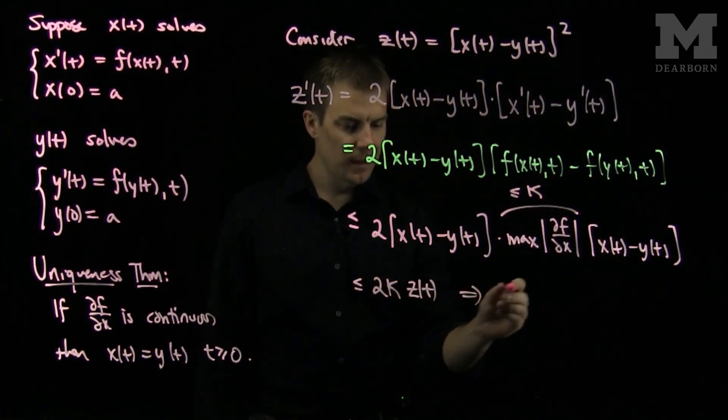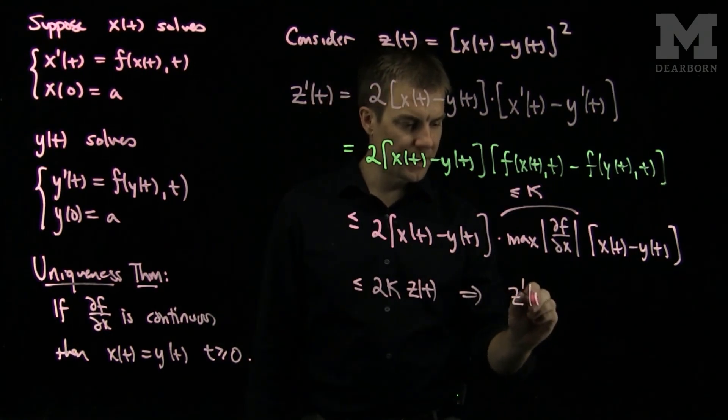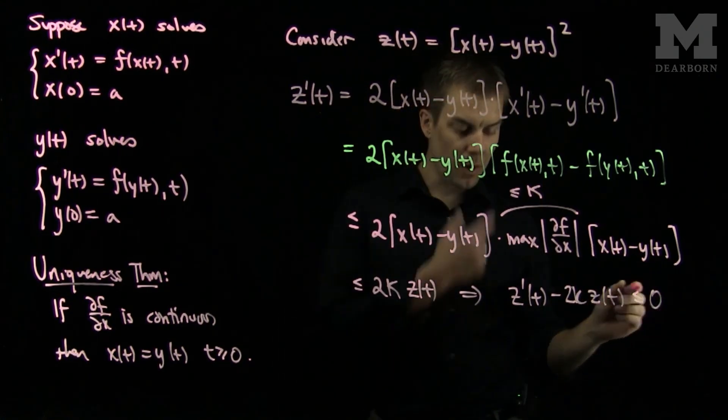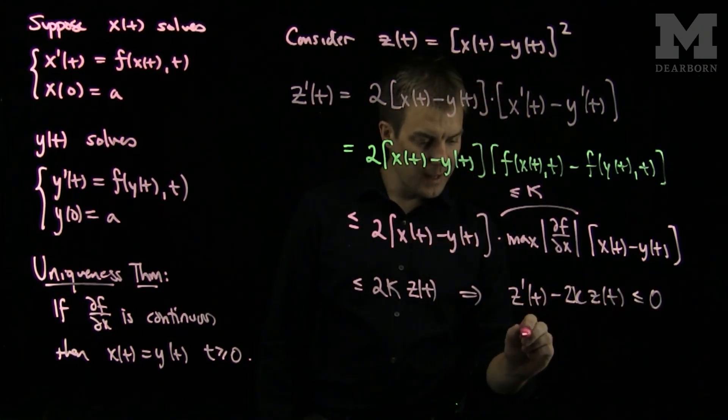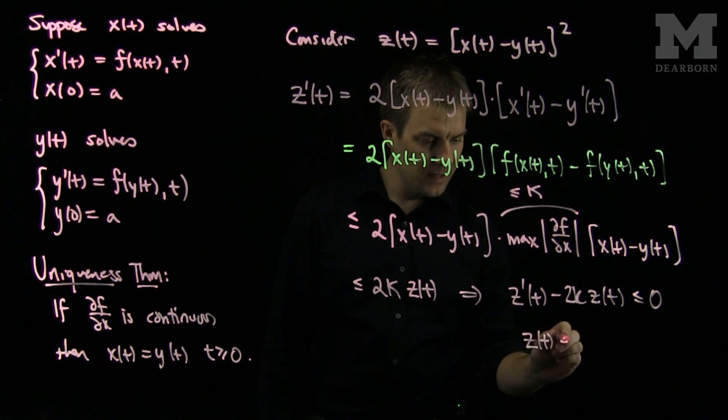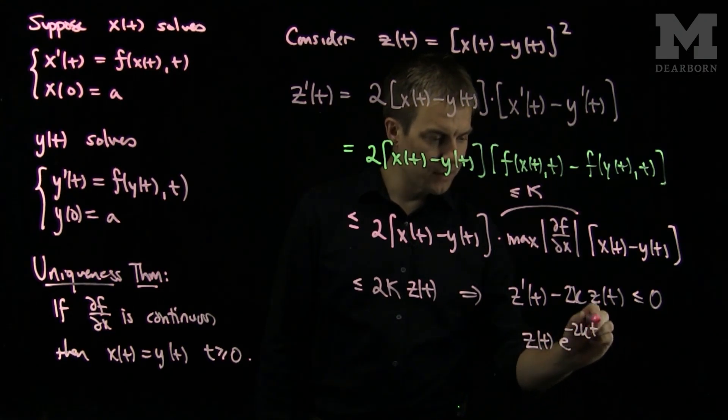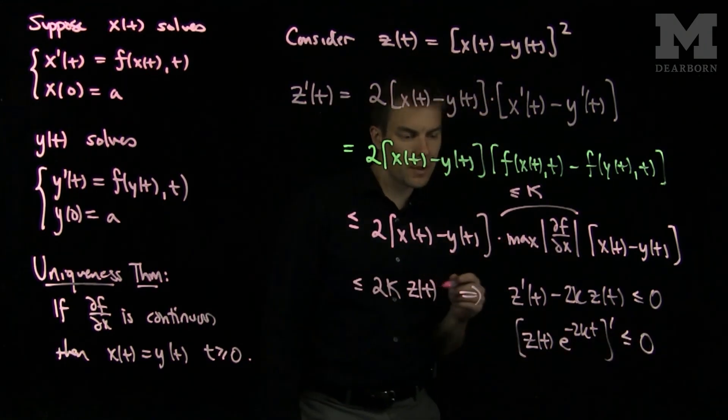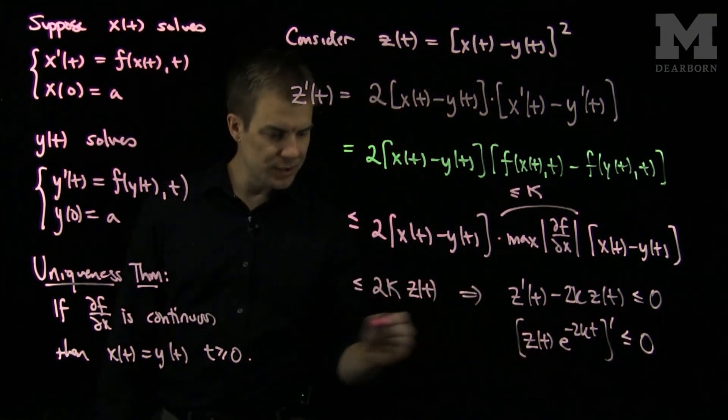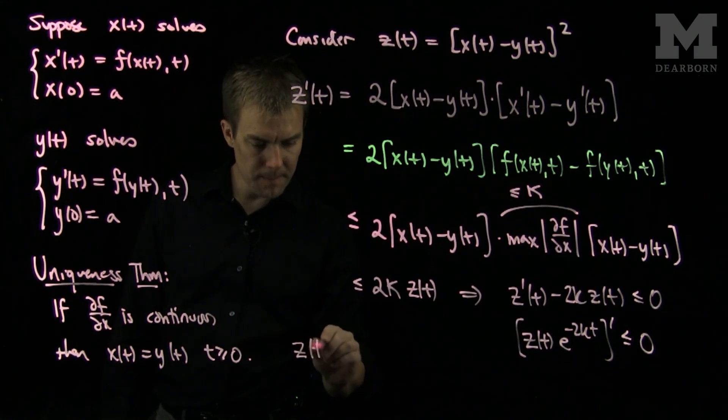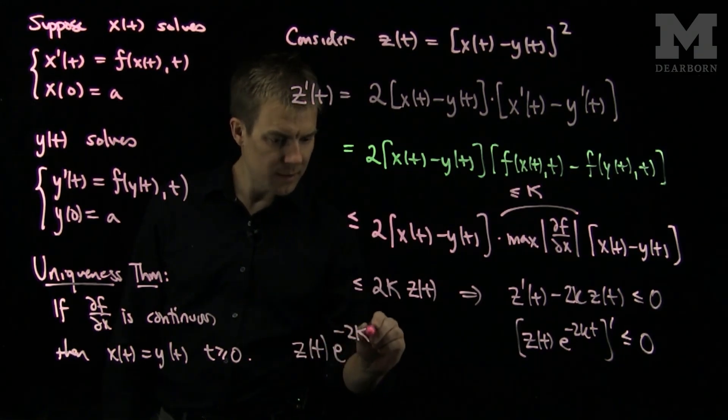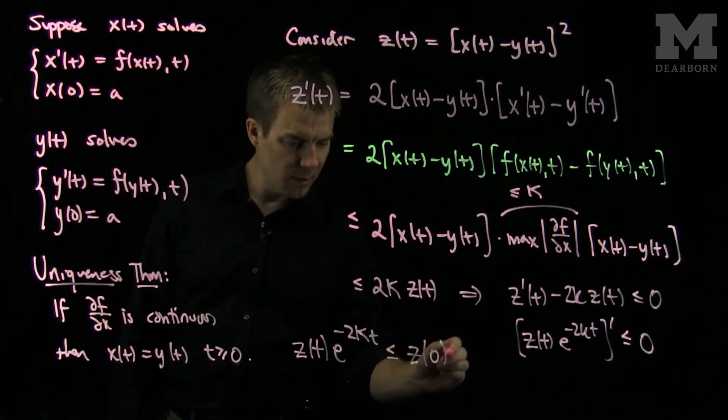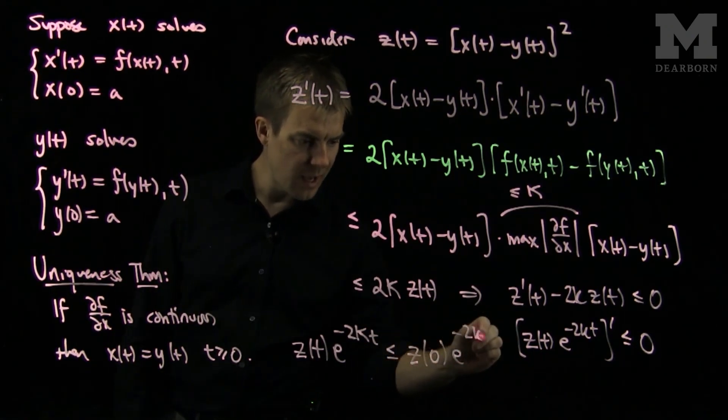This tells me that z prime of t minus 2k z of t is less than or equal to 0. Or, that z of t times e to the minus 2k of t prime is less than or equal to 0 by using my integrating factor, which tells me that this function is decreasing. So, z of t e to the minus 2k t is less than or equal to z of 0 e to the minus 2k 0.